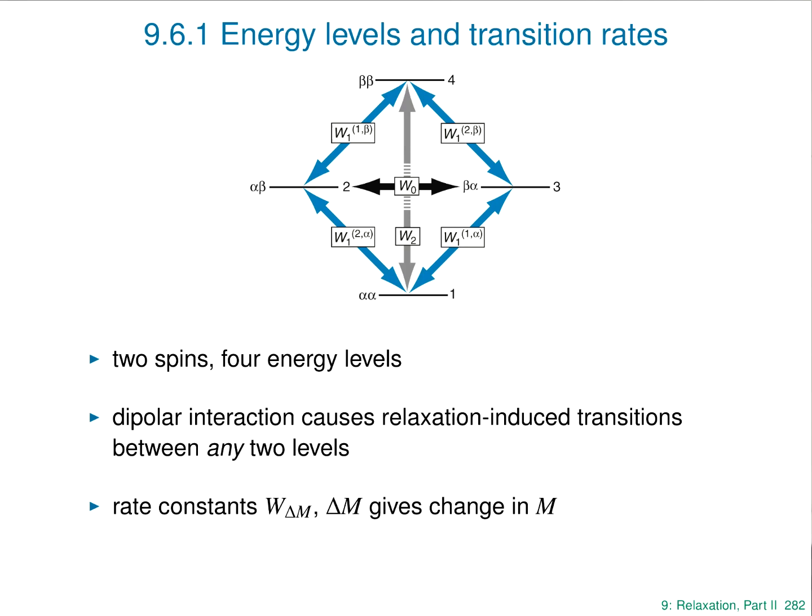These relaxation rate constants are labelled according to the delta-m value. To add further complications, the two W1 transitions of spin 1 — transitions 1-3 and 2-4 — have rate constants that are in principle different, called W1,1-alpha and W1,1-beta. So even this rather simple system of four energy levels is connected by a complex set of relaxation pathways through dipolar relaxation.